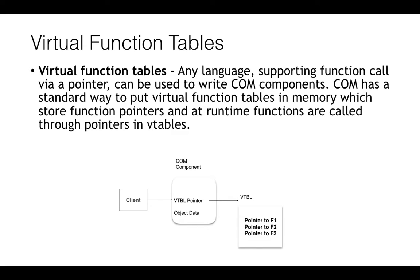These function pointers are used at runtime to call functions through those pointers. Here you can see that a client can use a COM component through its vtable pointer, and that vtable pointer points to a vtable. That vtable has pointers to various functions like f1, f2, f3, etc. This is one of the things you should be knowing about COM.